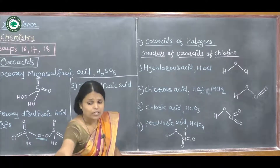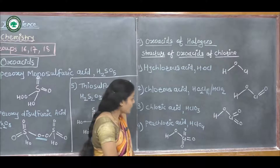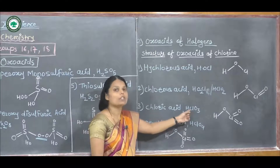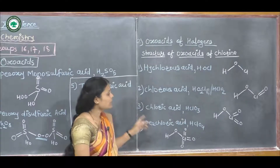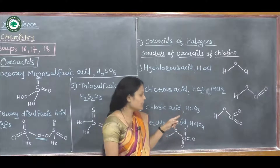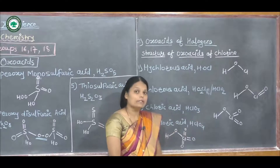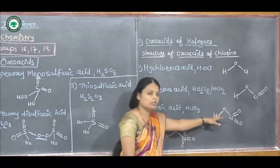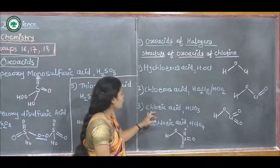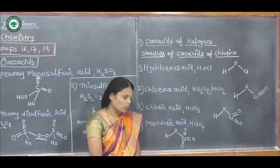The third structure is chloric acid. Its formula is HClO₃. Here there are three oxygen atoms. Chlorine has two double bonds to oxygen and one single bond to an OH group, meaning one hydrogen, three oxygens, and one chlorine atom. The oxygen count increases step by step.